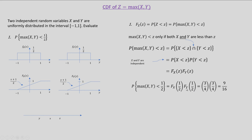F_X(1/2) is obtained by replacing x with half in the CDF expression. You get half plus 1, which is three-halves, divided by 2, which equals three-quarters. Similarly, F_Y(1/2) is also three-quarters, and hence the product equals nine-sixteenths. So the probability that max of x comma y is less than half equals nine by sixteen.